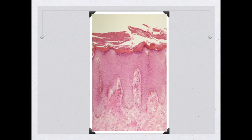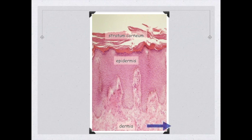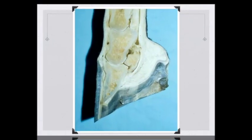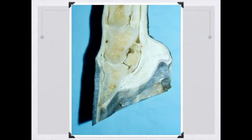If we remember the skin, it consisted of a dermis, an epidermis, and the stratum corneum was the outer layer of the epidermis. Looking at the hoof, the dermis is now going to be called the corium, the epidermis is going to be the germinal epithelium, and the stratum corneum is what makes up the hoof. Let's look at the hoof grossly — we have the epidermis here with an underlying dermis.